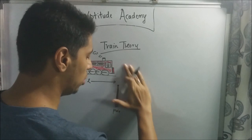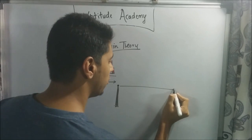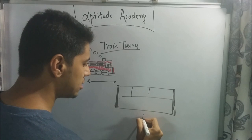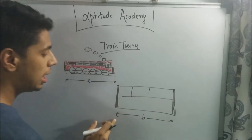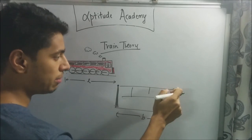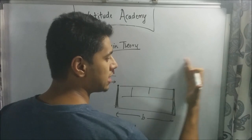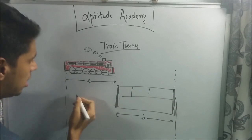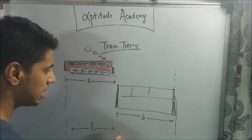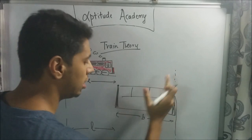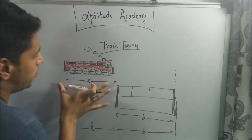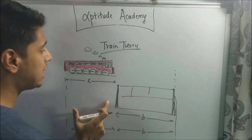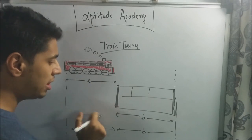Similarly, suppose instead of a pole there's a building or wall of length B. For the train to cross this wall, its back edge must pass the far end of the wall. The train's front starts at one end, travels length L, and then must travel an additional distance B. So for a train of length L to cross a building of length B, the train must travel a total distance of L plus B.